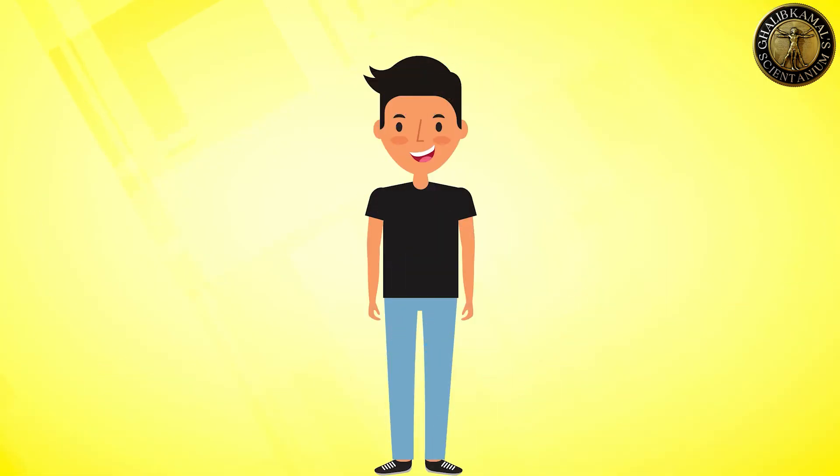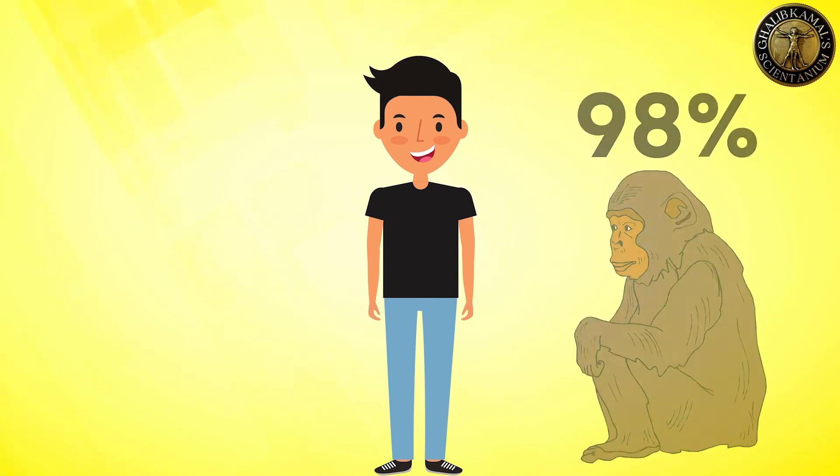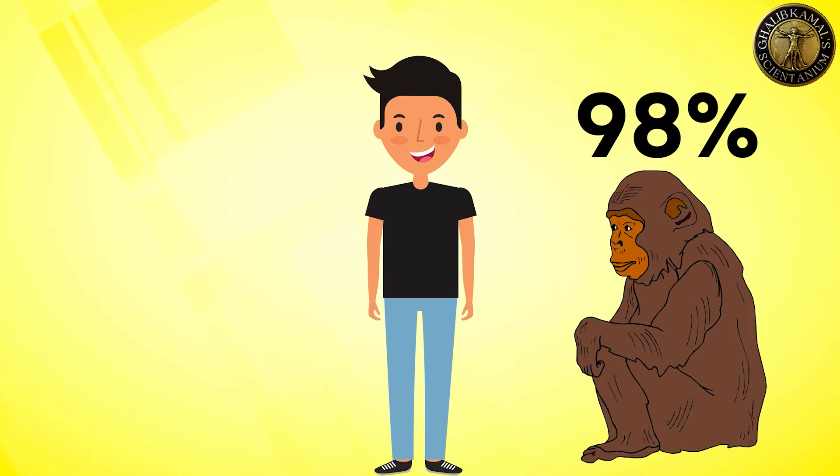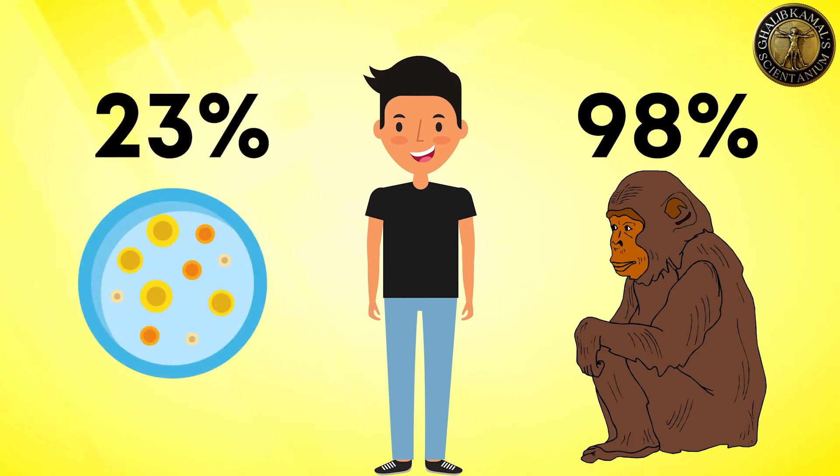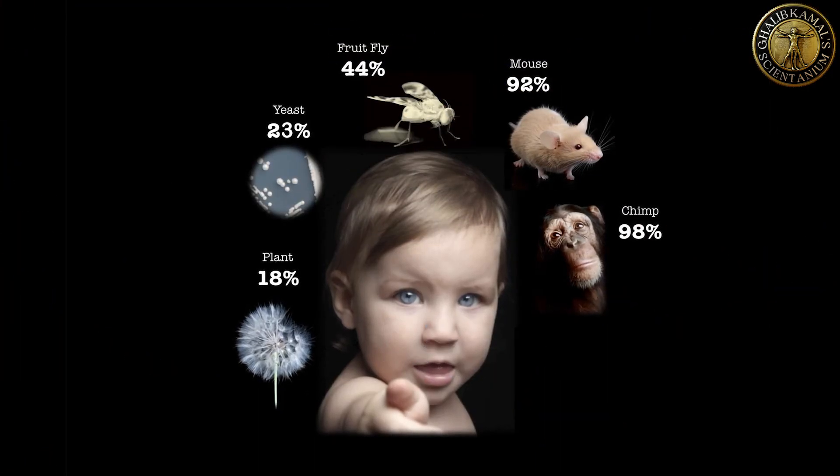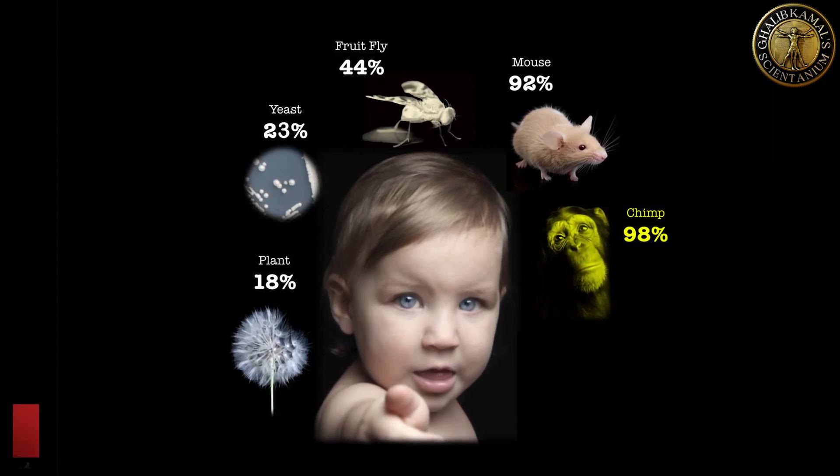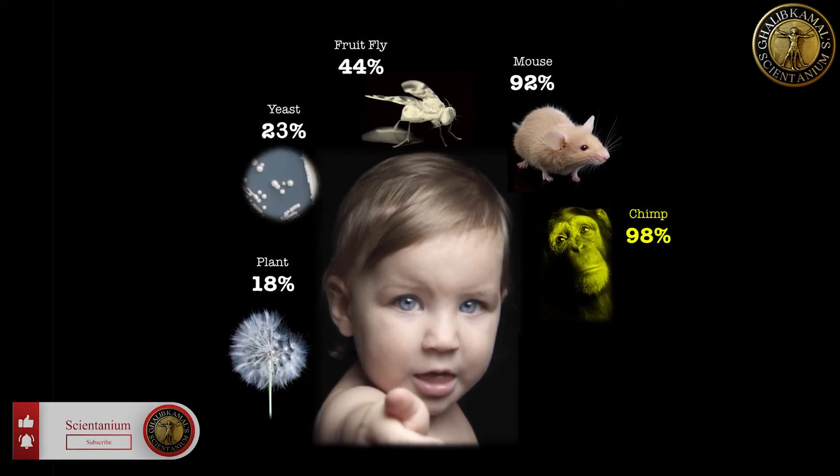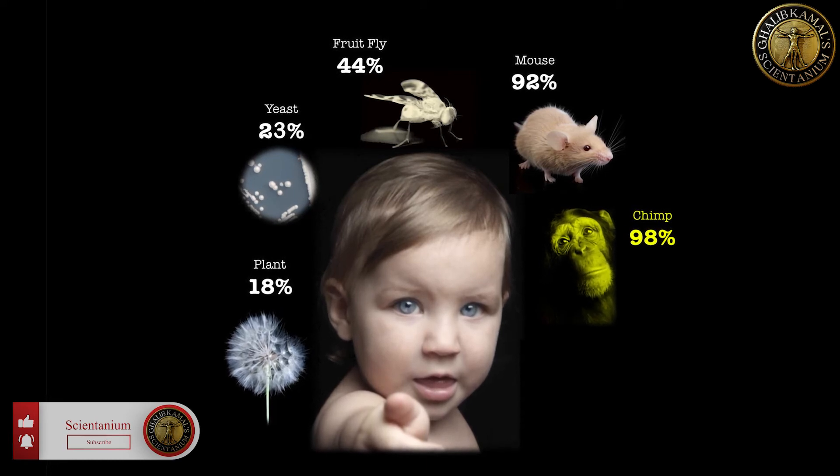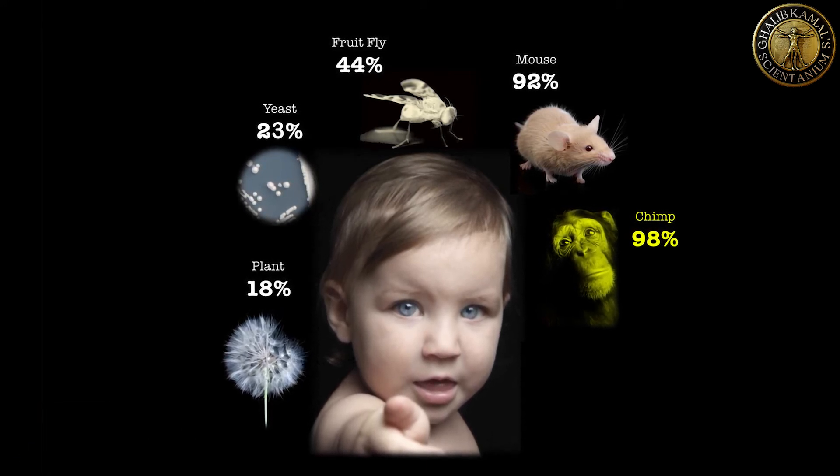Human beings have genetic similarities with all living organisms on Earth. We share more than 98% of our genome with chimpanzees. Still, we have 23% genetic similarity with even yeast. The organisms that share a common ancestor with us like the chimpanzee in the recent past have a greater genetic similarity. But the further in past we go, the more genetic similarity reduces.